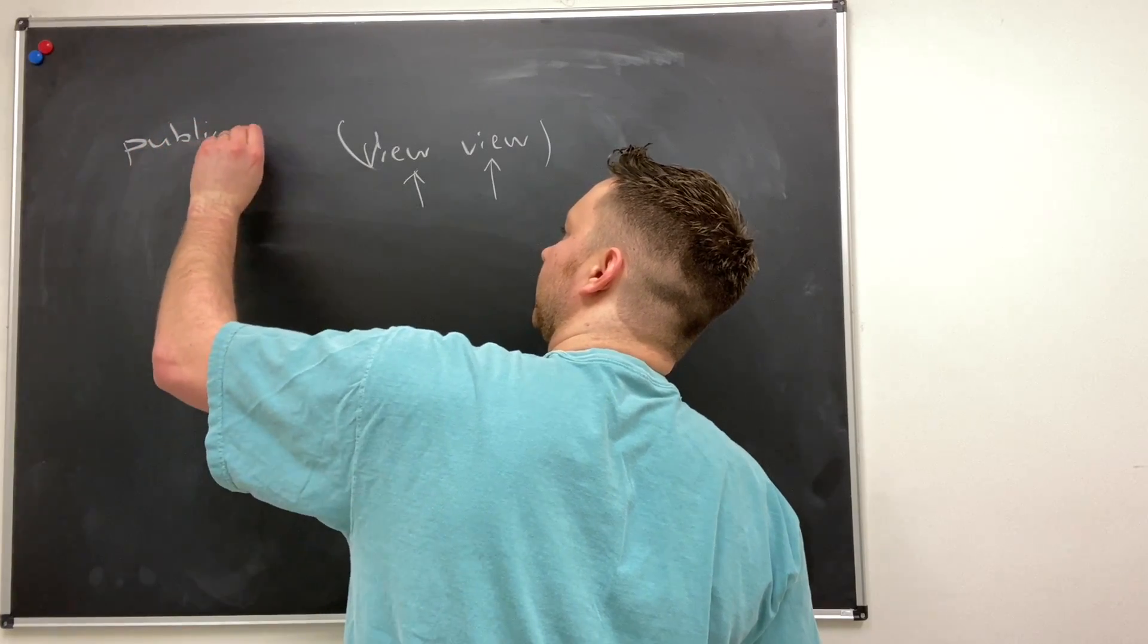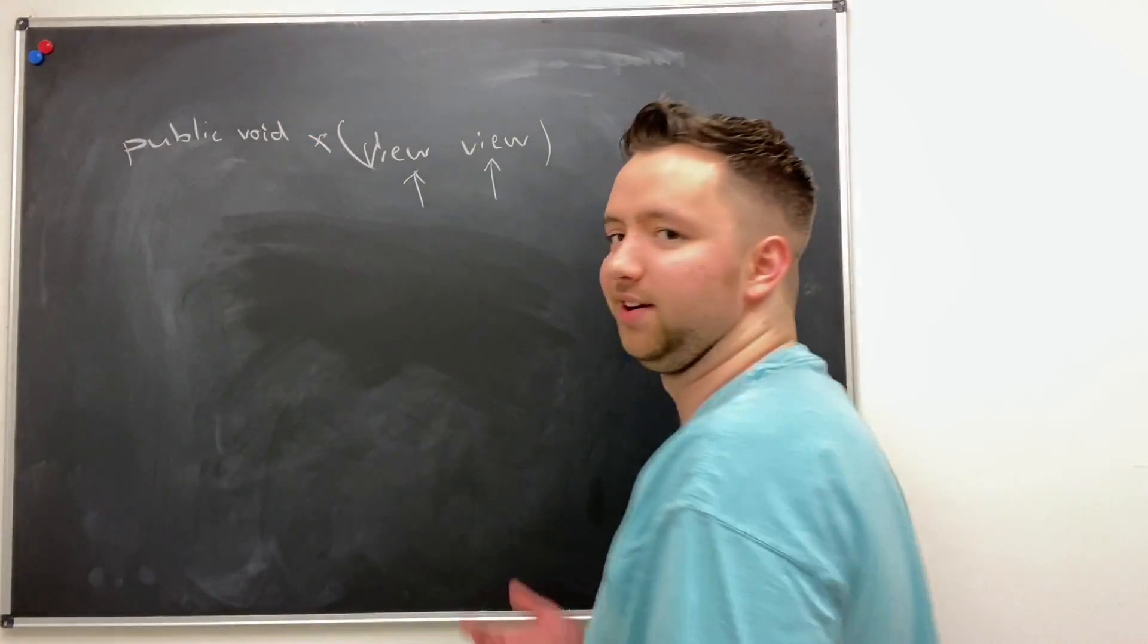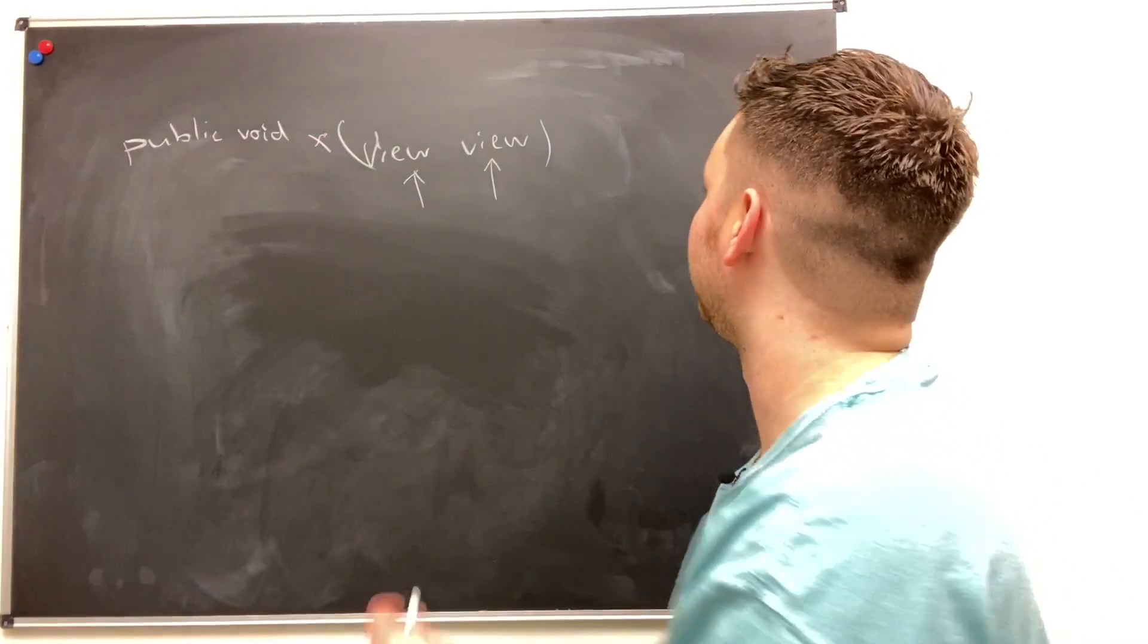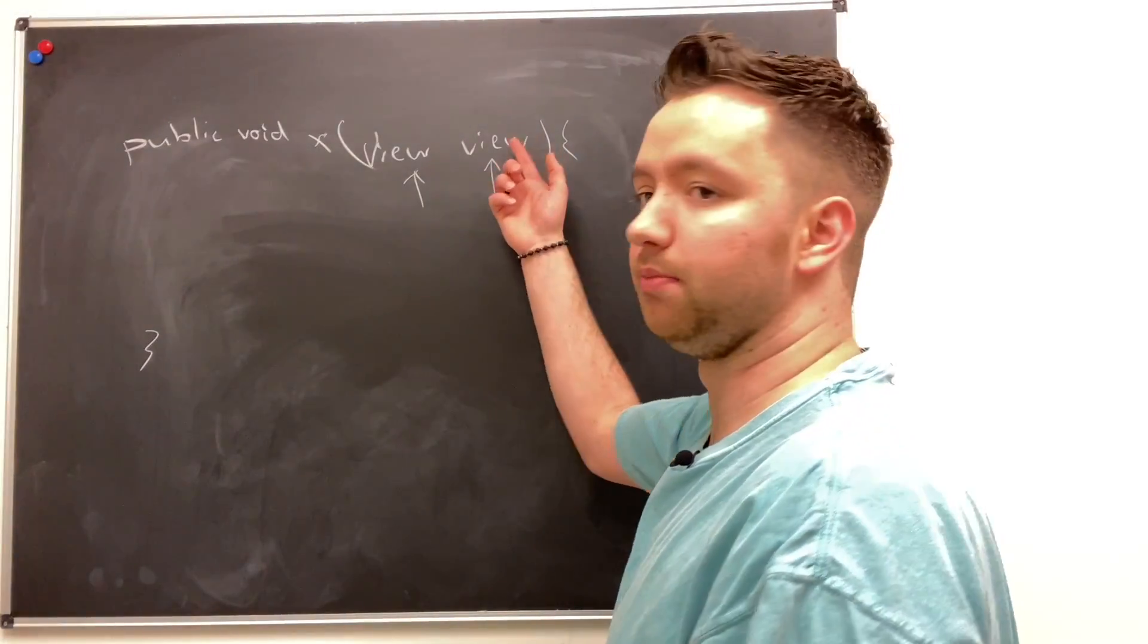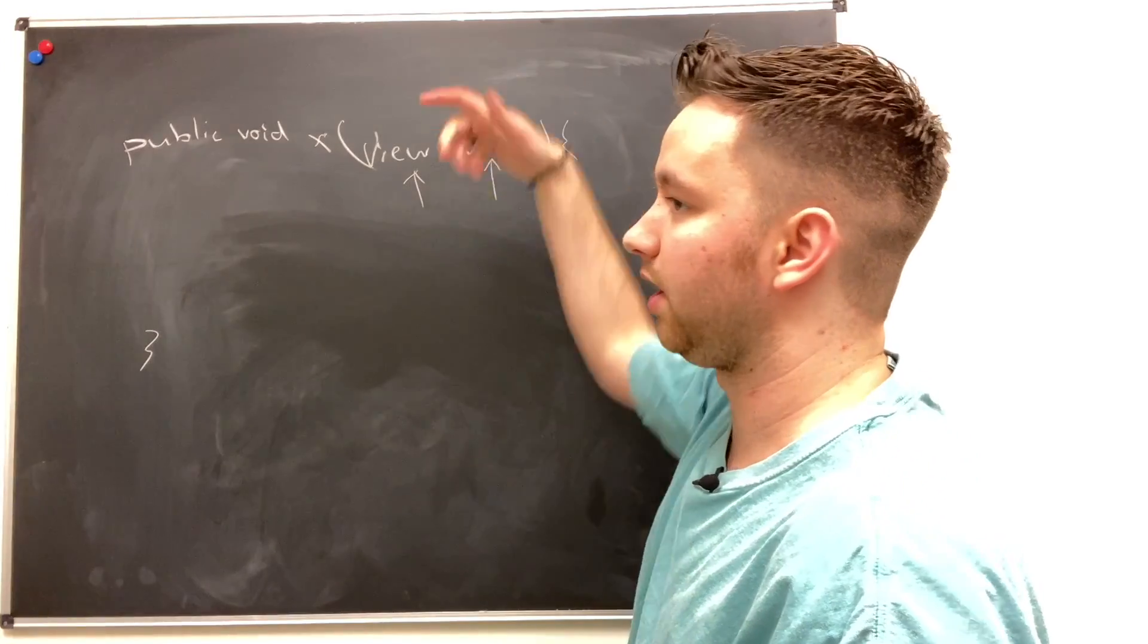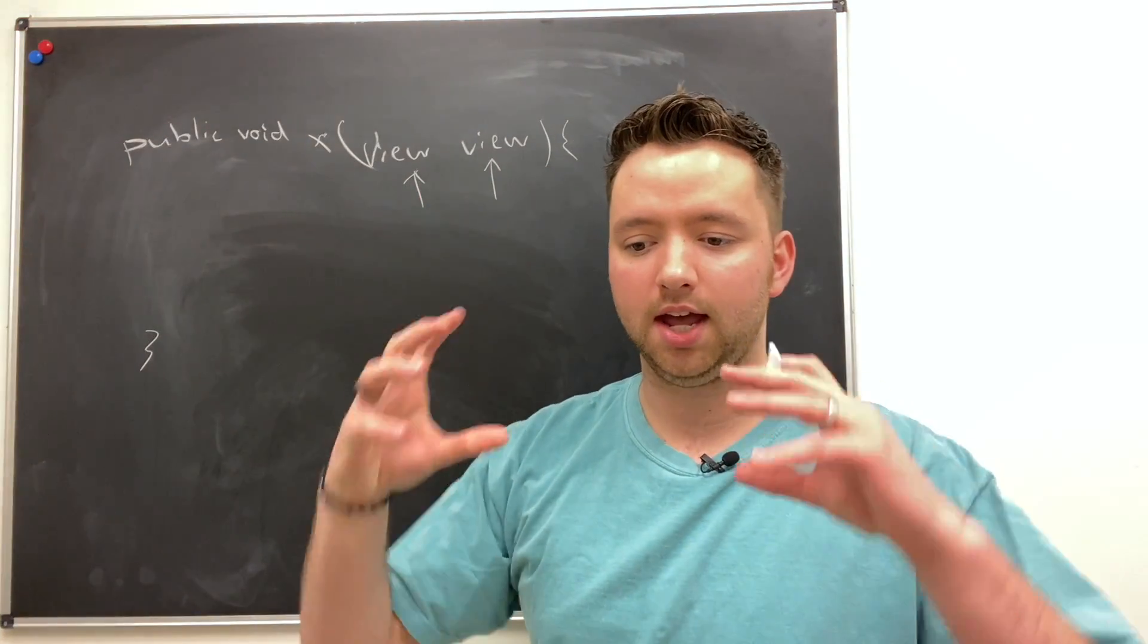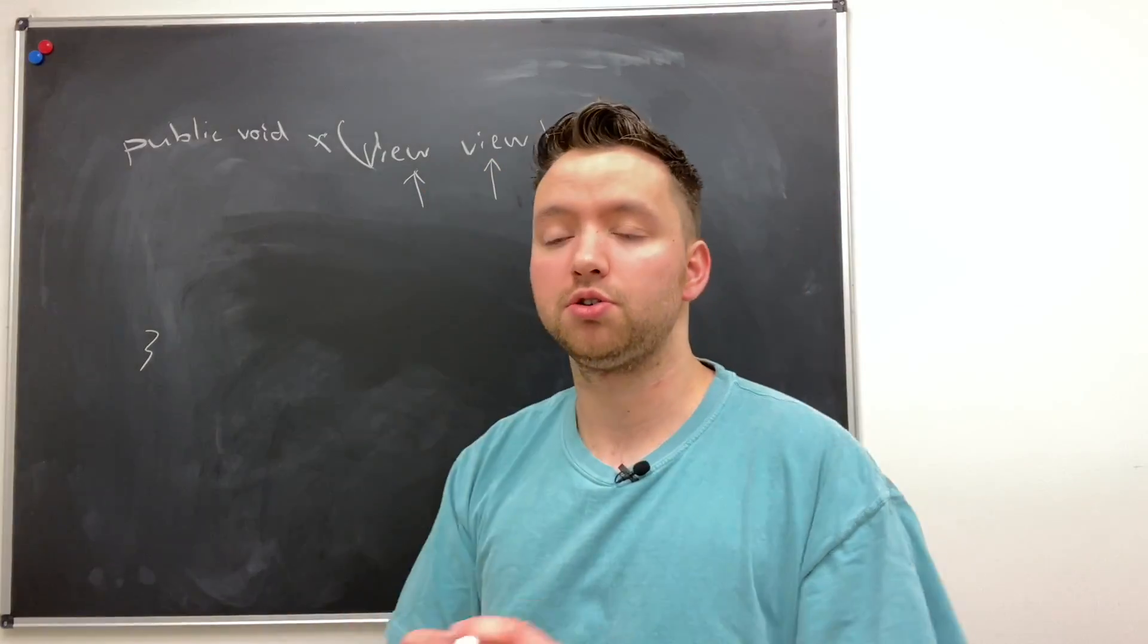Public void... I'm out of space. We'll just call it X, whatever. It doesn't really matter what it's named. The point here is we can work with the view or the button in the case of the click right here by using this variable and you can get the object using that.